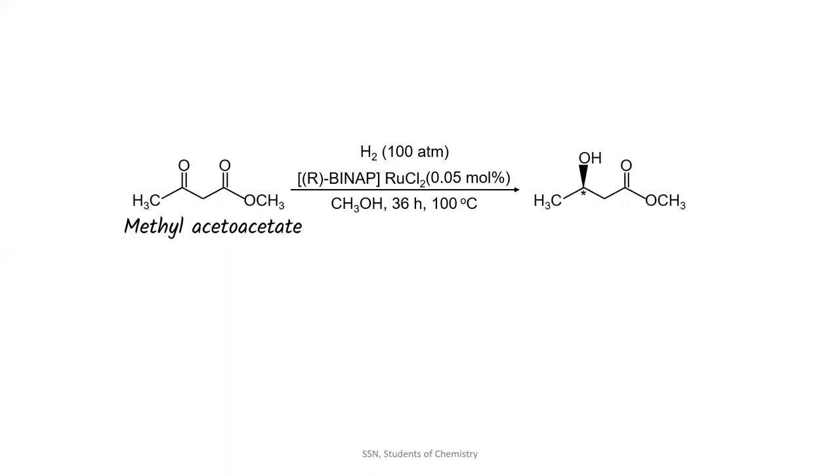That gave them the corresponding asymmetric alcohol, which was found to have 96% yield and greater than 99% enantiomeric excess. EE denotes enantiomeric excess. That means this particular enantiomer was present in excess compared to the other enantiomer. That is why this is an enantioselective reaction.